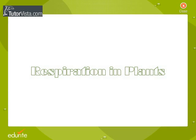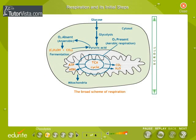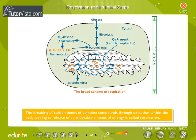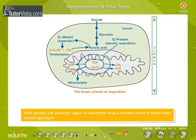Respiration in plants: the breaking of carbon bonds of complex compounds through oxidation within the cell, leading to release of considerable amount of energy, is called respiration. Both aerobic and anaerobic types of respiration have a common series of initial steps termed glycolysis.